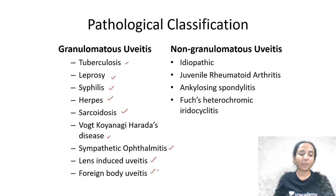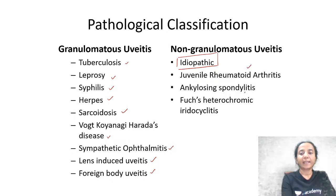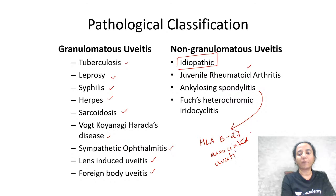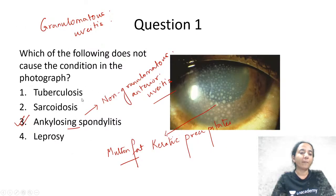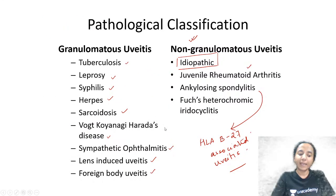The causes of non-granulomatous uveitis include a large percentage that is idiopathic. Other important causes are JRA, ankylosing spondylitis (HLA-B27-associated uveitis), and Fuchs heterochromic iridocyclitis. In the question, TB, sarcoid, and leprosy are all granulomatous; only ankylosing spondylitis is non-granulomatous, and hence the answer.